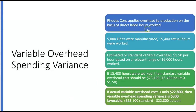Rhodes Corp applies overhead to production on the basis of direct labor hours worked. On the CPA exam, almost every problem on variable overhead is going to use direct labor hours as the cost driver. Rhodes Corp applies overhead on the basis of direct labor hours worked, meaning the more direct labor hours worked, the more variable overhead they apply. They chose direct labor hours as the cost driver because they feel that as people work more, variable overhead cost is incurred.